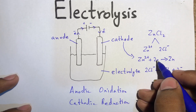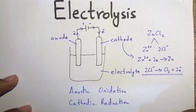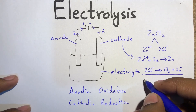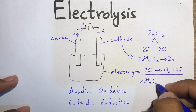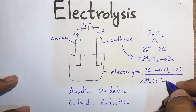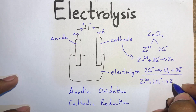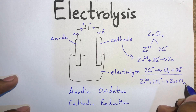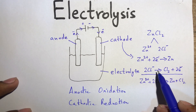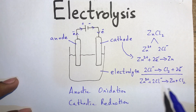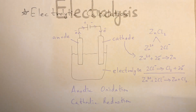The electrons are balanced, so if we add the two half-equations we get the overall equation: Zn²⁺ + Cl₂ → ZnCl₂. This is the cathodic equation, the anodic equation, and the overall equation for the electrolysis. These were the basics of electrolysis.